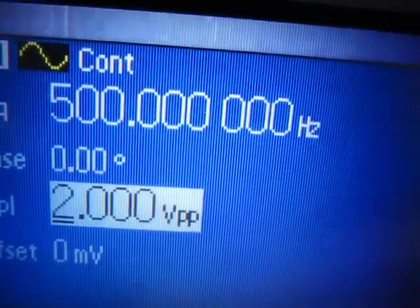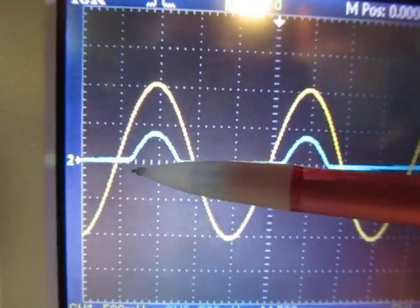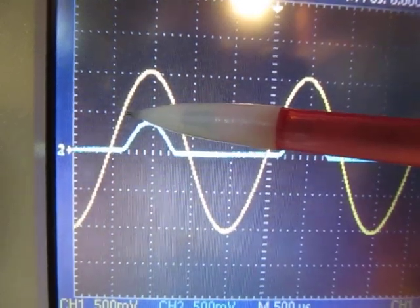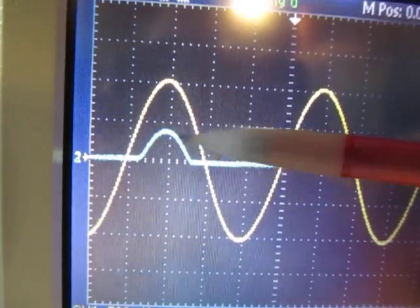If I turn the signal generator up here to make it say two volts peak-to-peak, now we can kind of see what I drew on the paper. Once the input voltage gets up about six-tenths of a volt or so, now we start to see the output rise.